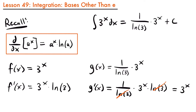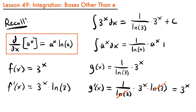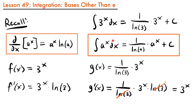As a result of this demonstration, we can create an integration rule for exponential functions like 3 to the power of x. More generally, the integral of a to the power of x dx is equal to 1 divided by the natural log of a times a to the power of x plus c. This is the integration rule for an exponential function that has a base that is not e.